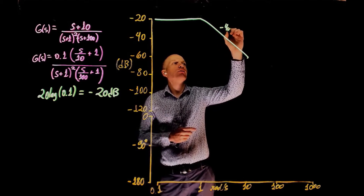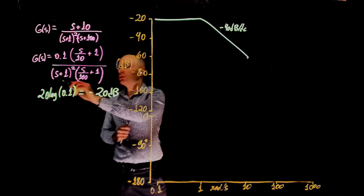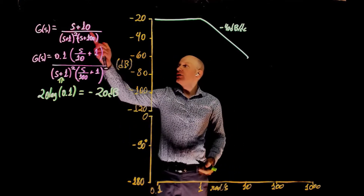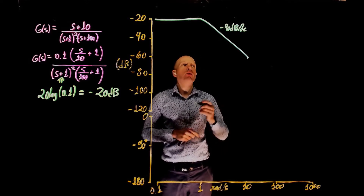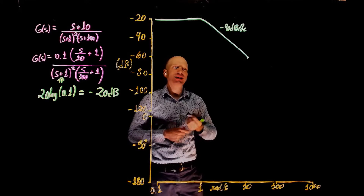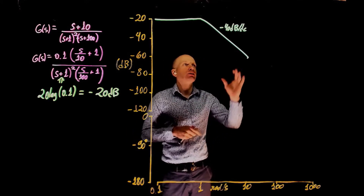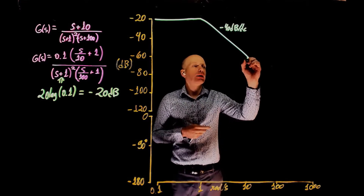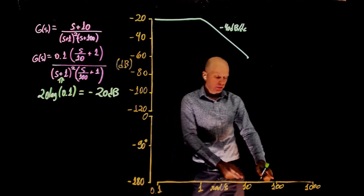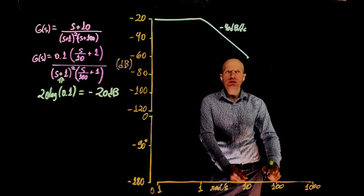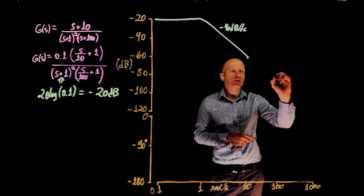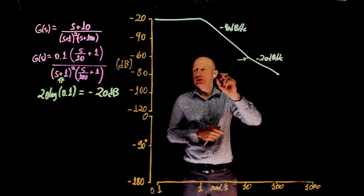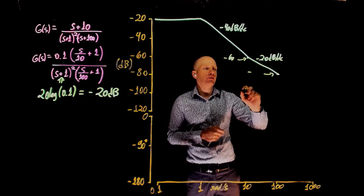The slope here is negative 40 dB per decade due to the two poles at negative 1. When we reach 10 rad/s, we encounter a zero. The zero adds plus 20 dB per decade to the existing slope of negative 40 dB — it doesn't create a slope of 20 dB/dec on its own, it adds 20 dB/dec to the slope immediately before it. So the slope becomes negative 20 dB per decade. Starting from negative 60 dB at ω=10, going to ω=100 (a factor of 10), the Bode plot goes down by 20 dB, reaching negative 80 dB.